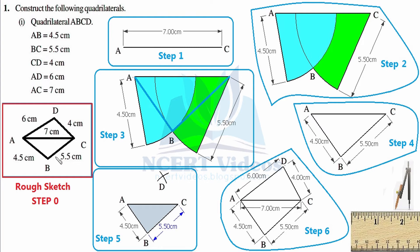Now it is just a matter of constructing the actual quadrilateral ABCD using actual measurements. This idea is not new — you have constructed such figures using a ruler and pair of compasses in your previous standard. We start by drawing whichever line segment seems easiest. AC seems easy, so we draw a line segment of 7 cm using actual measurements and name its endpoints A and C. This is Step 1.